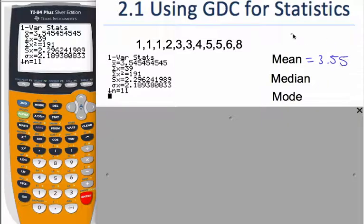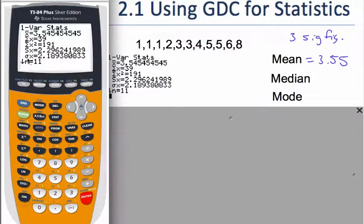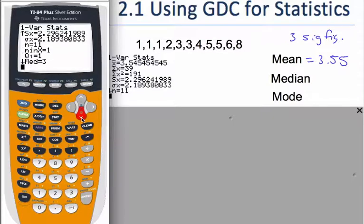The median is our middle number. If you notice there's an arrow here that means there's more information down low, so let me just click down, toggle down, and I get the median is three. So I know my median is going to be three.